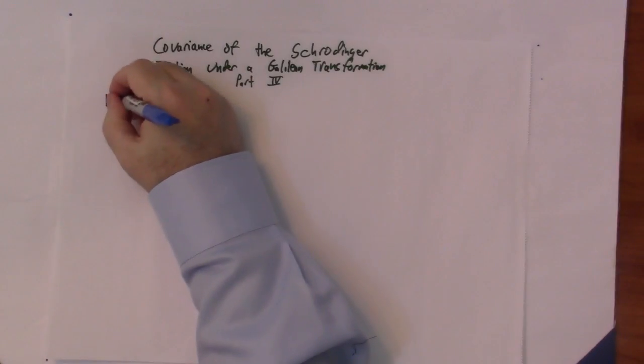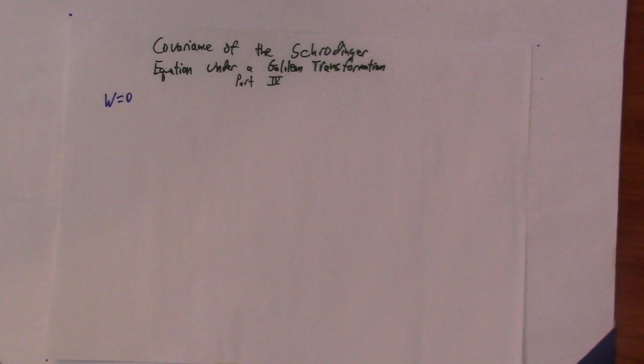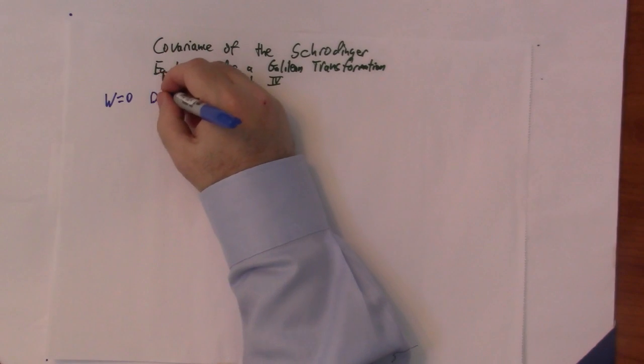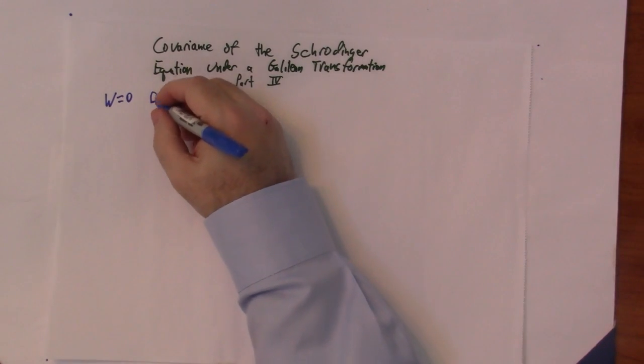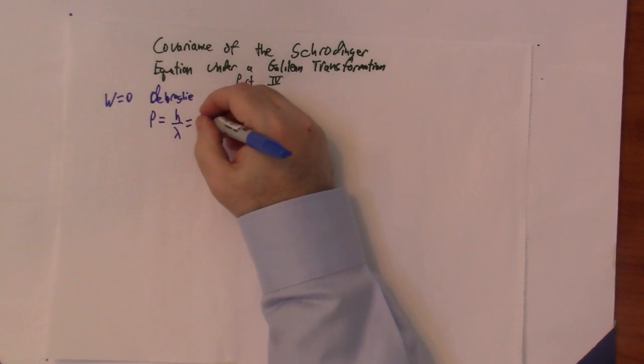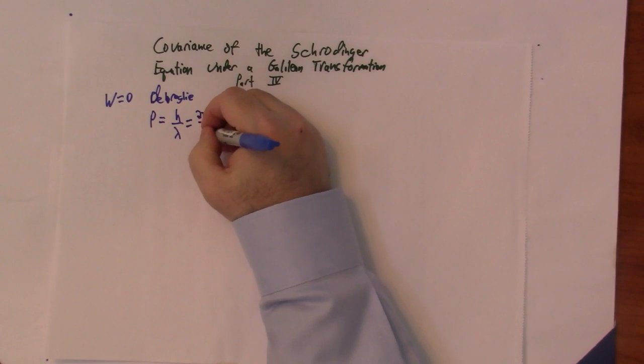In this video, I'm going to work with zero potential, so W equals zero, and the usual de Broglie relation. I know there are several pronunciations of his name. I believe the correct one is probably de Broglie, but I've been using de Broglie all my life, so I'll just continue with that ignorant pronunciation. So this is P equal H over lambda, also could be written as 2 pi H bar over lambda.